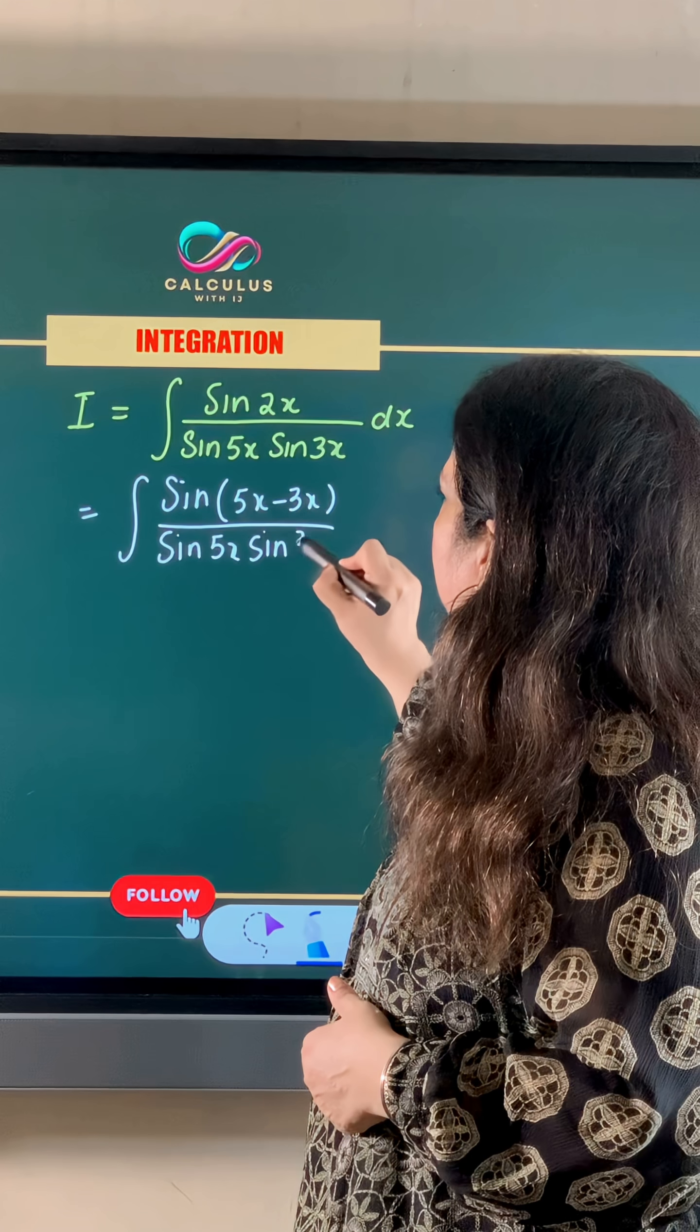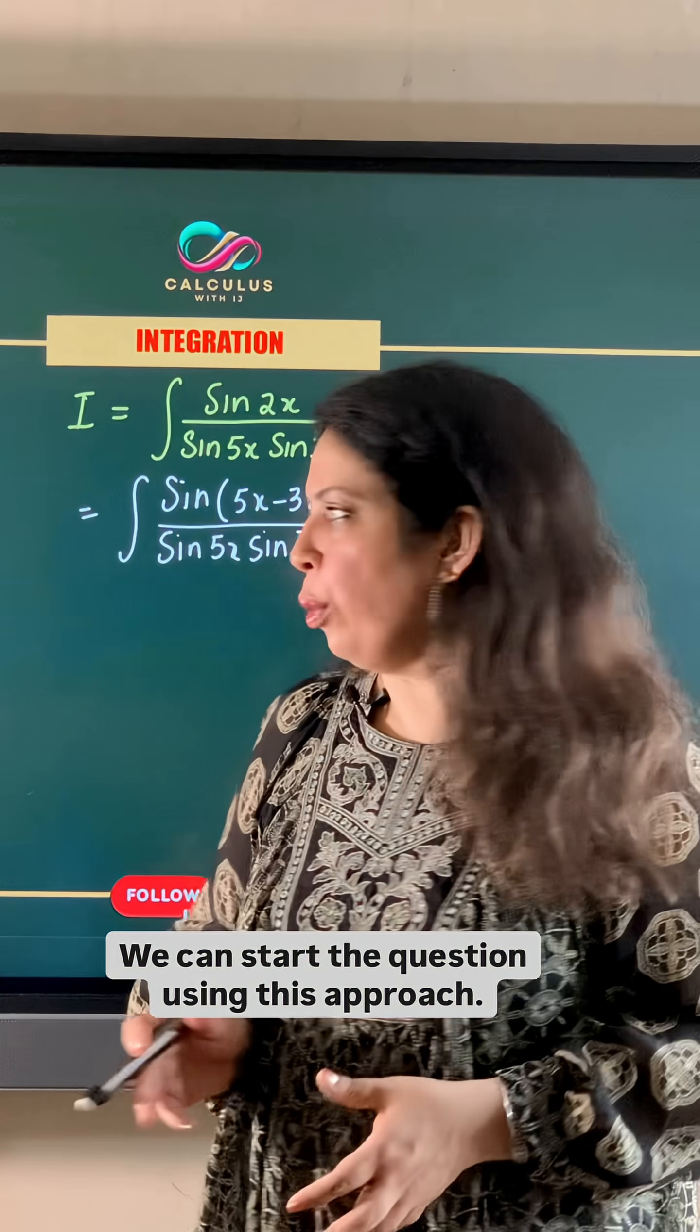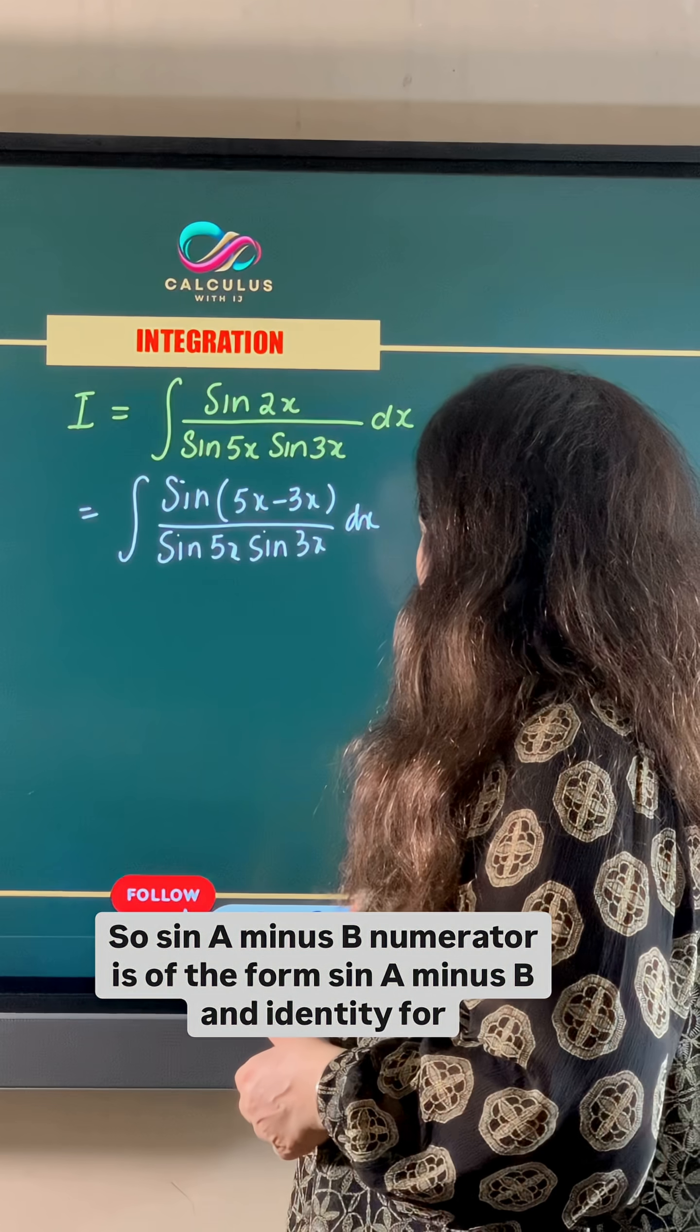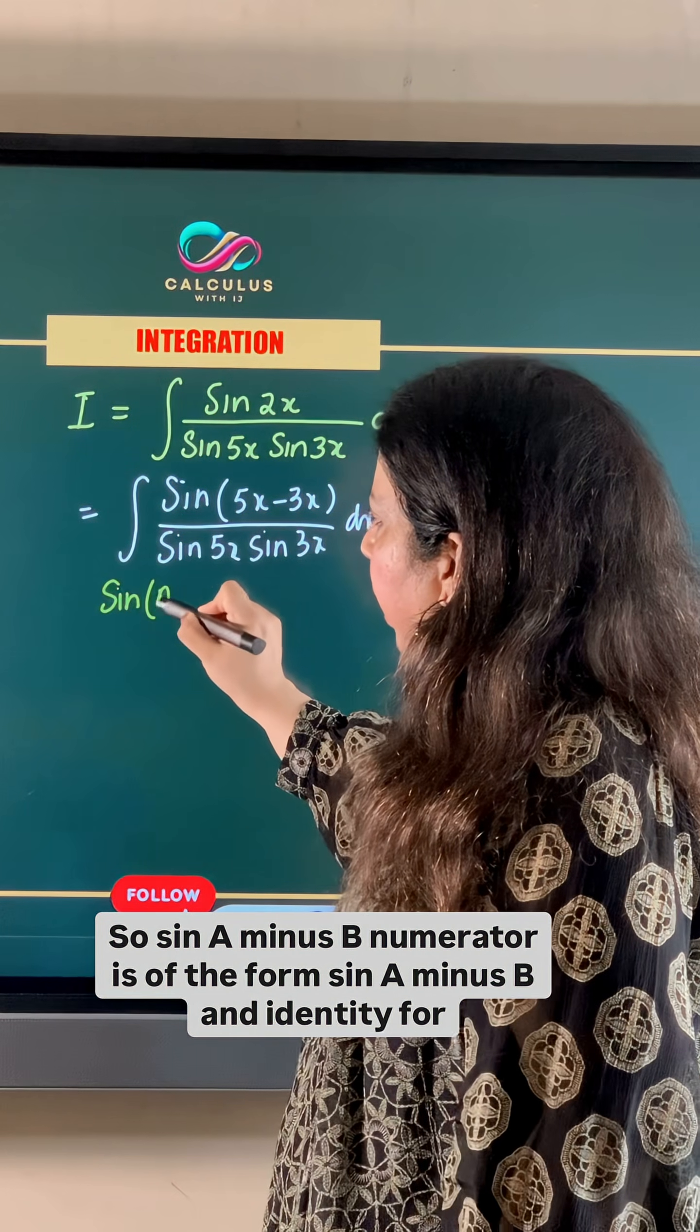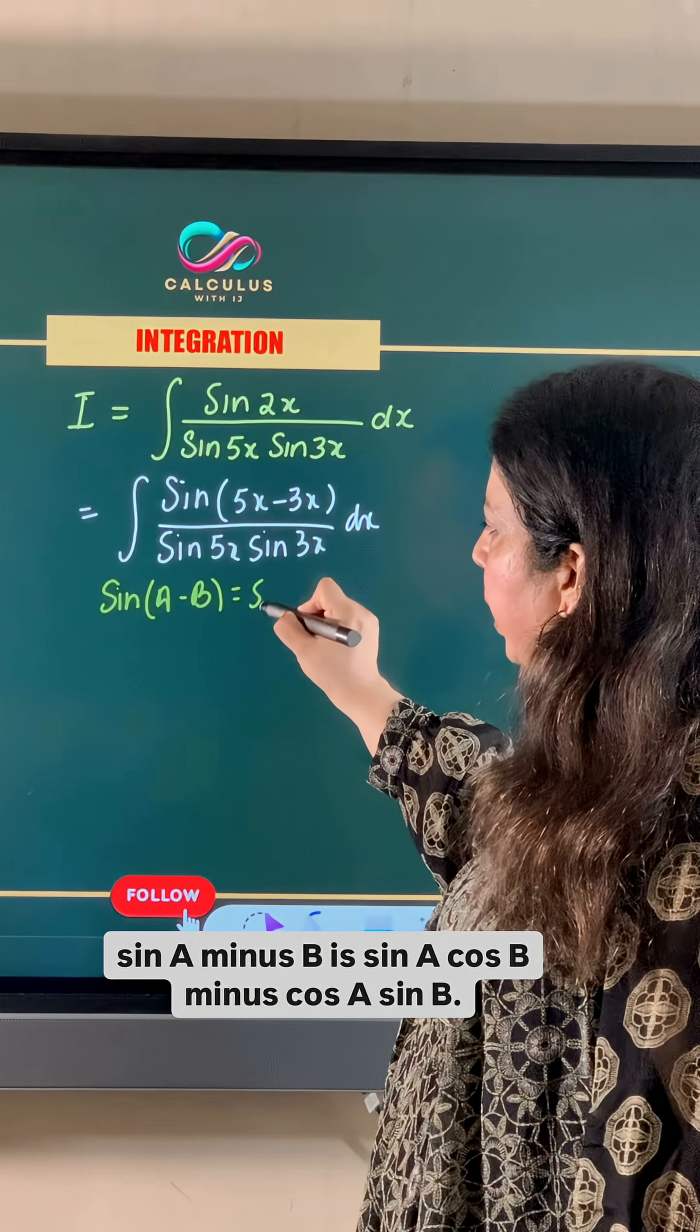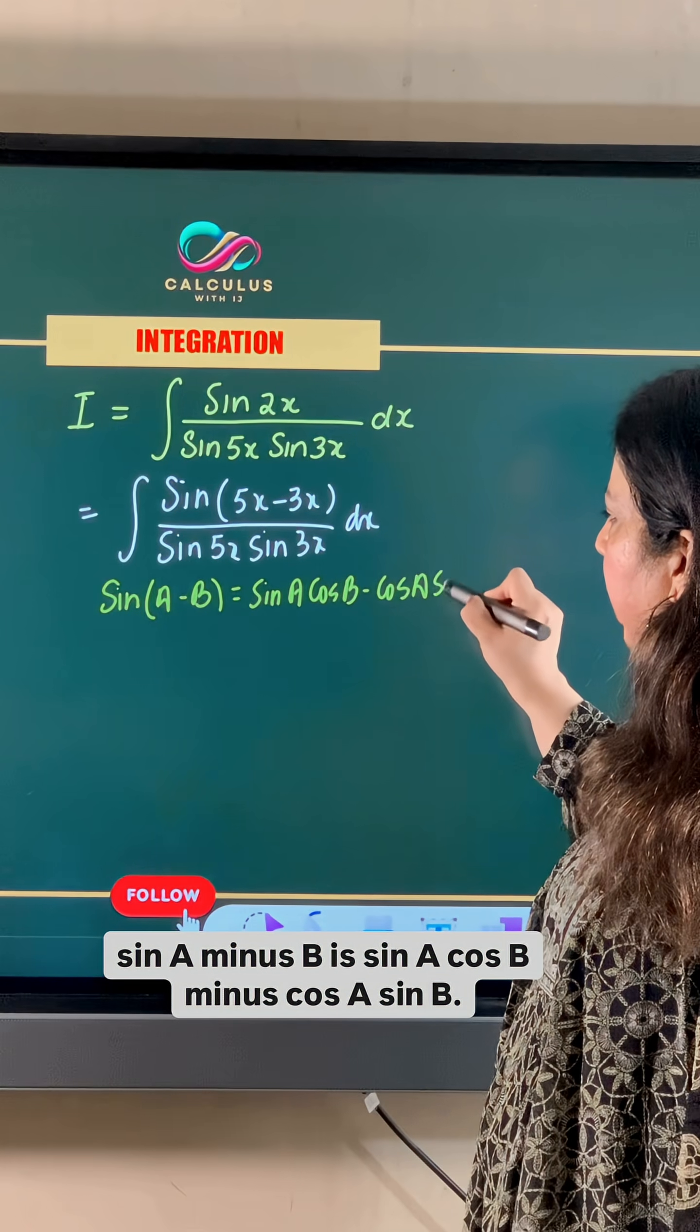So we can start the question using this approach. The numerator is of the form sine(a minus b), and the identity for sine(a minus b) is sin a cos b minus cos a sin b.